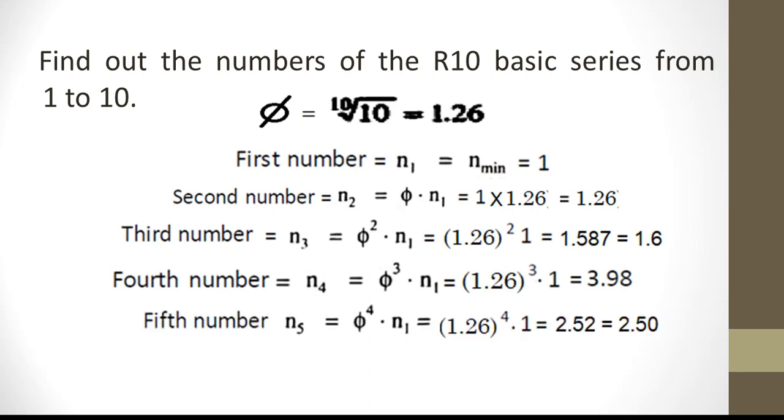N5 is phi raised to 4 into N1 which turns out to be 2.52. We will round off and make it as 2.50. N6 by the same above method turns out to be 3.17. We will round off and make it as 3.15.